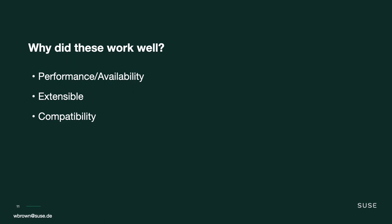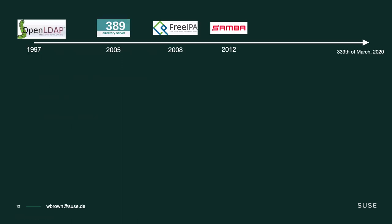Because of these things that have worked really well, this idea exists that authentication is considered solved or boring. Here's the timeline: OpenLDAP from 1997, 389 in 2005, FreeIPA in 2008, and Samba 4 in 2012.